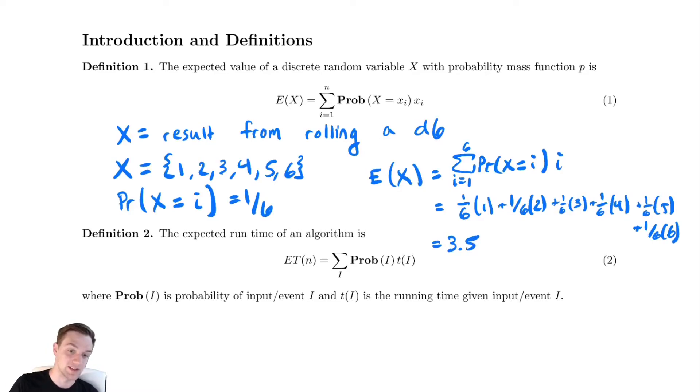If we factored out the 1 sixth we are adding up the first six digits and you would get 6 times 7 over 2 times 1 sixth gives you 7 halves. That's a classic example.